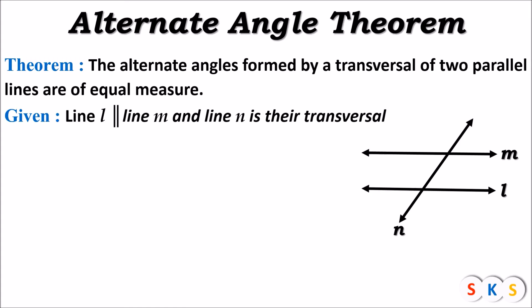So what is given: line L is parallel to line M, and line N is their transversal. Now, what I have to prove is that the alternate angles formed by those two parallel lines and the transversal are of equal measures. Look at this figure — angle A and angle B is one pair of alternate angles.